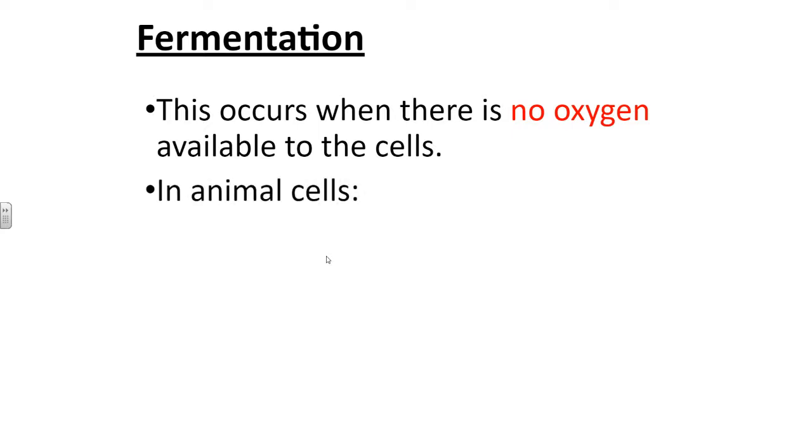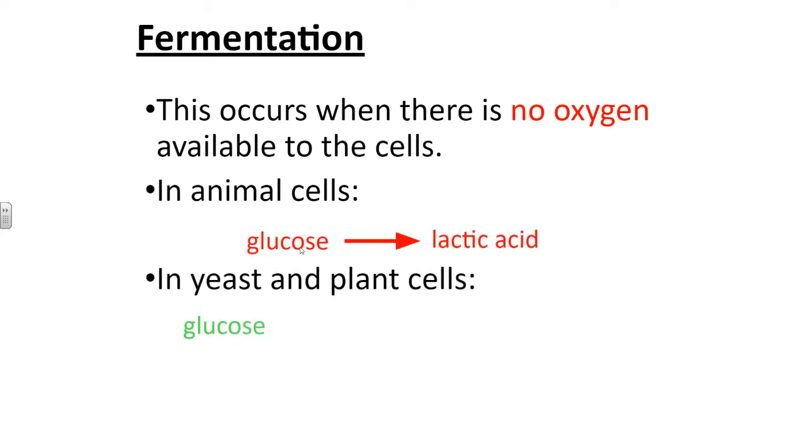In animal cells we have a different form of fermentation than in plant and fungal cells. You remember from aerobic respiration that plant, animal and fungal cells all did the same process. In fermentation, animal cells can turn glucose into lactic acid or lactate, and the yeast and plant cells turn the glucose into carbon dioxide and ethanol.